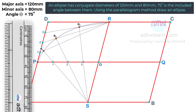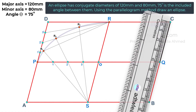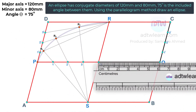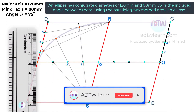Take a ruler and divide this QC length into four parts. Each part will be 1 centimeter in length. Name these points as 1 dash, 2 dash, and 3 dash. Next, divide this OQ length into four divisions. Each division will be 1.5 centimeters in length. Mark these points as 1, 2, and 3.